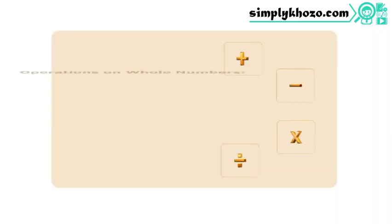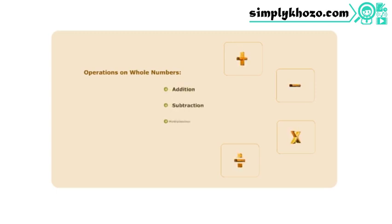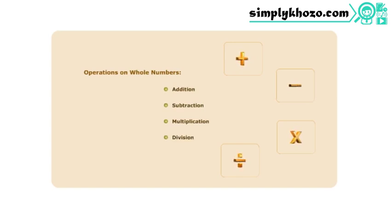Four basic operations of mathematics can be performed on whole numbers. These are addition, subtraction, multiplication, and division. Let us look at the properties of each of these operations.